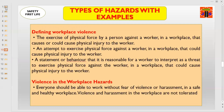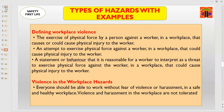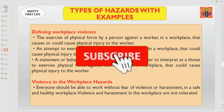Another type or form of hazard is workplace violence. What is workplace violence? It is the exercise of physical force by a person against a worker in a workplace that causes or could cause physical injury. It also includes an attempt to exercise physical force against a worker, or a statement or behavior that it is reasonable for a worker to interpret as a threat to exercise physical force. Remember, all three conditions are considered as workplace violence, and everyone should be able to work without fear of violence or harassment in a safe and healthy workplace.